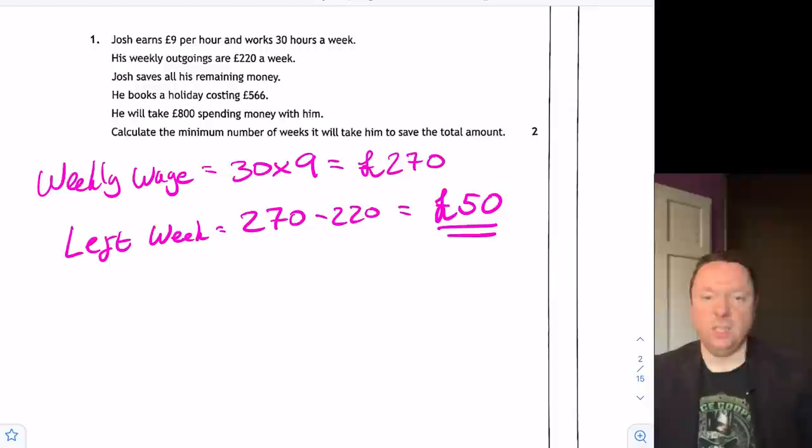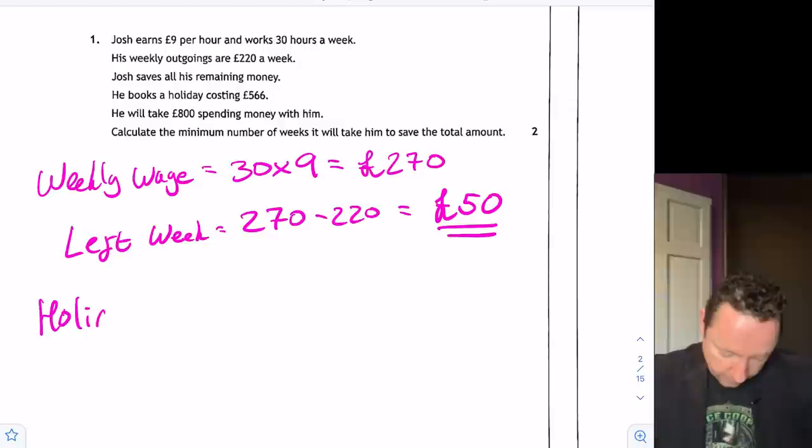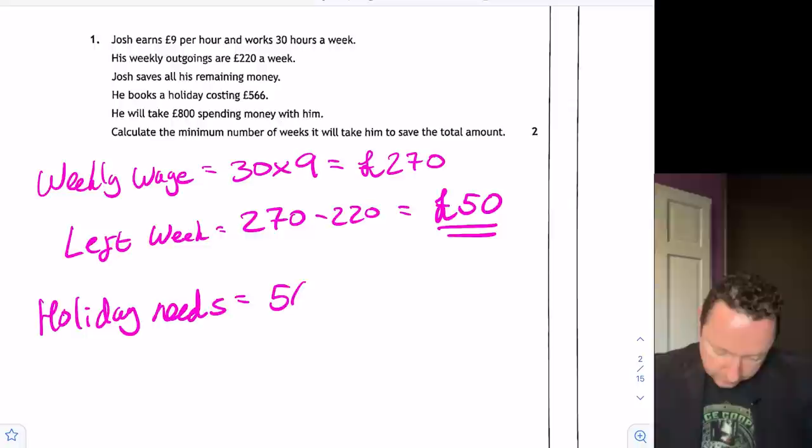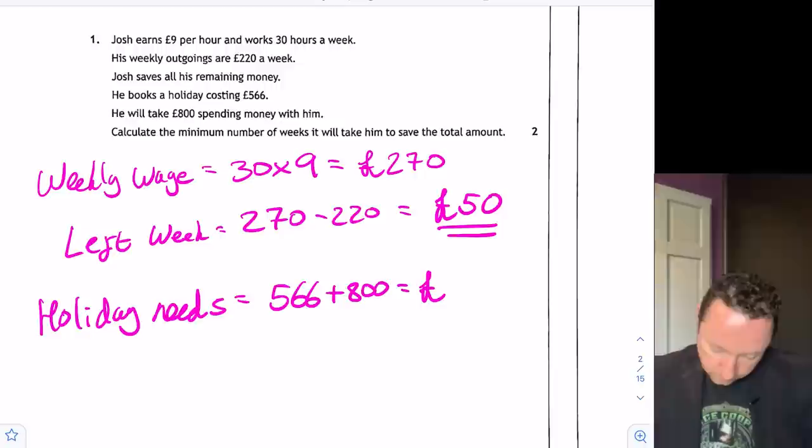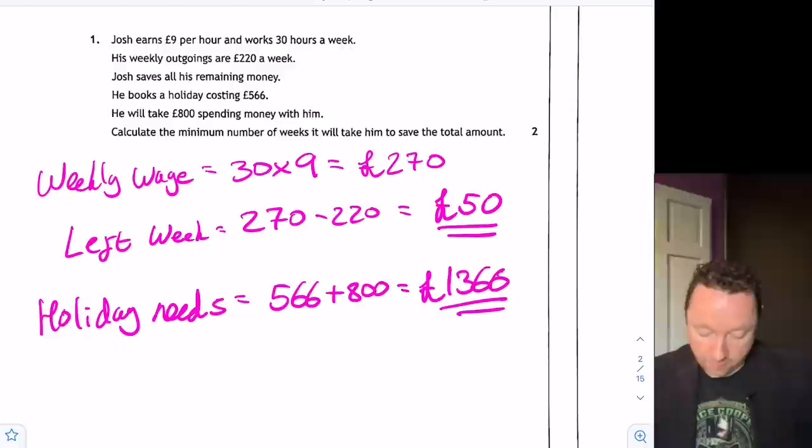But then his outgoings are £220 a week. So what he's got left per week equals £270 minus £220. Just count out £345 to £70. £50 is what he's got left per week.